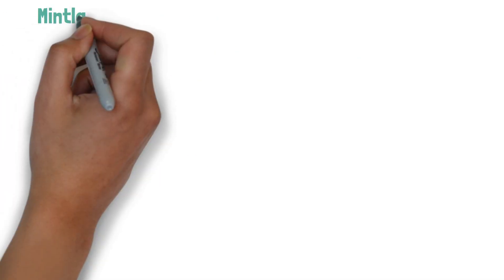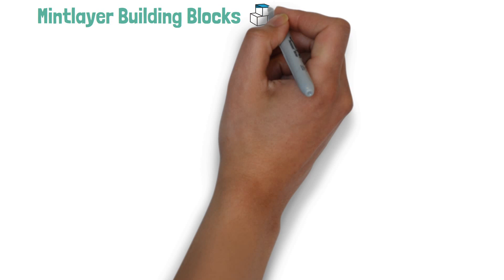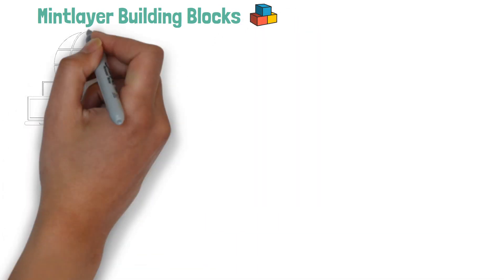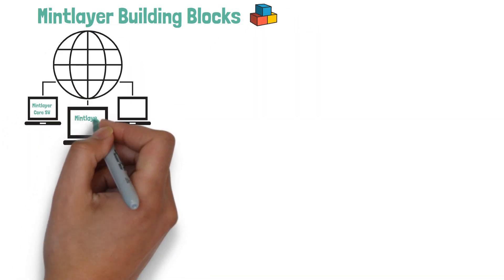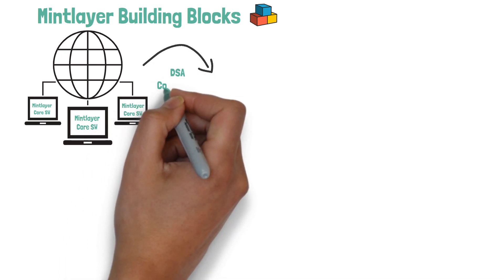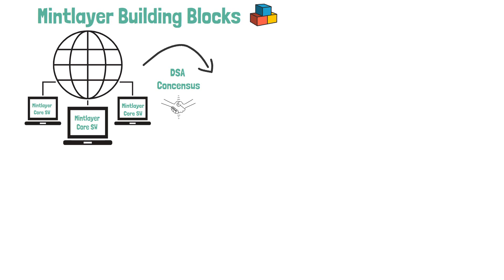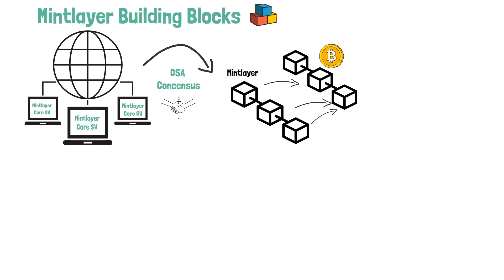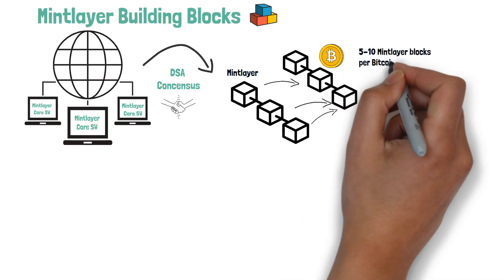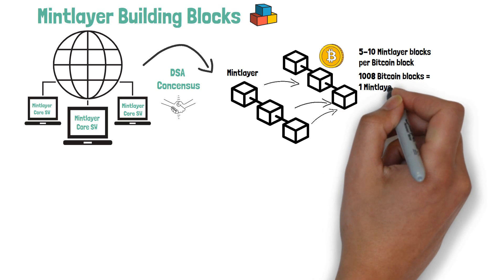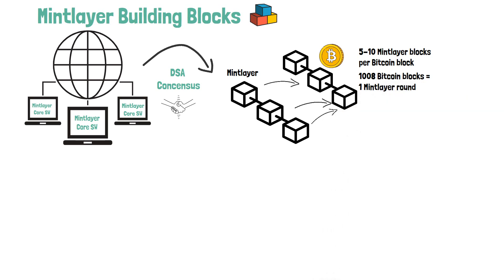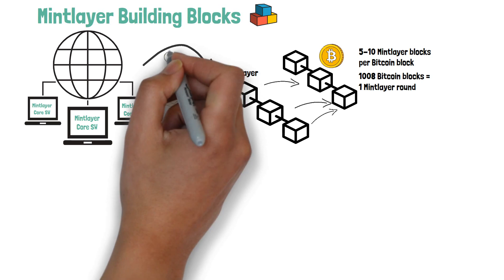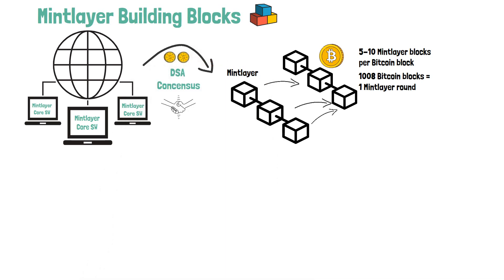MintLayer consists of the following building blocks. First and foremost there is the MintLayer core software. It is executed on all the nodes in the network with the dynamic slot allotment consensus protocol that produces the blockchain. Every MintLayer block references a Bitcoin block. On MintLayer, 5 to 10 blocks are generated for one Bitcoin block. 1008 Bitcoin blocks define one MintLayer round. For a MintLayer round, nodes are selected as participants which can create and sign blocks. The probability of being selected as a participant depends on the amount of MintLayer tokens put at stake by the corresponding node.